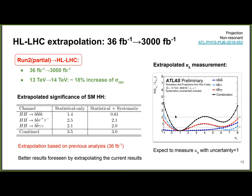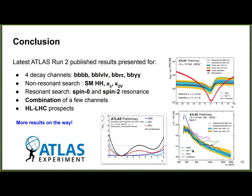For the High-Luminosity LHC with 3000 fb⁻¹ and an 80% increase in HH cross-section from higher center-of-mass energy, projections show three-sigma significance for SM HH signal combining three channels. It will also be possible to measure κλ with uncertainty smaller than one. These projections were made with previous analyses, so better results are expected extrapolating from full Run 2 results. In summary, the latest ATLAS Run 2 results have been shown for multiple channels for both non-resonant and resonant signals, with combinations and HL-LHC projections.